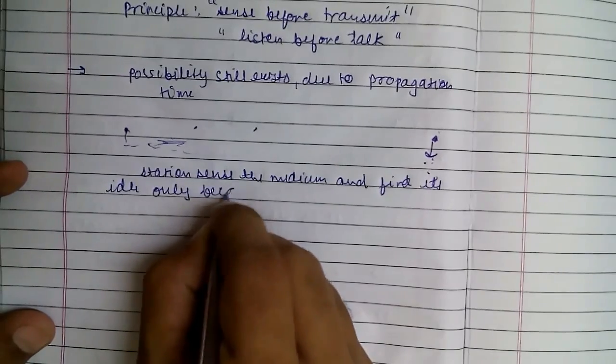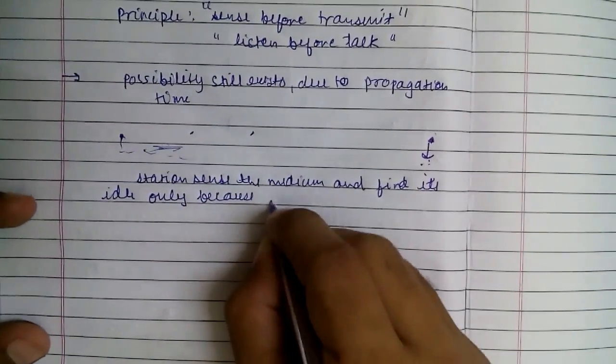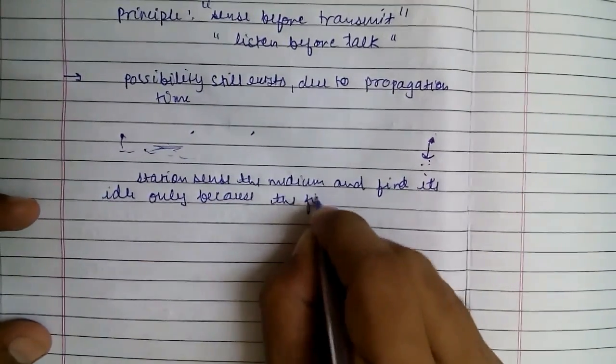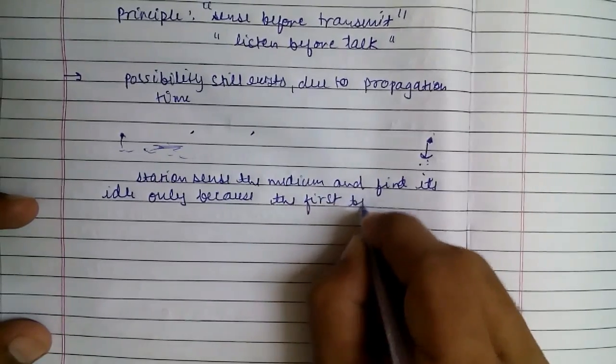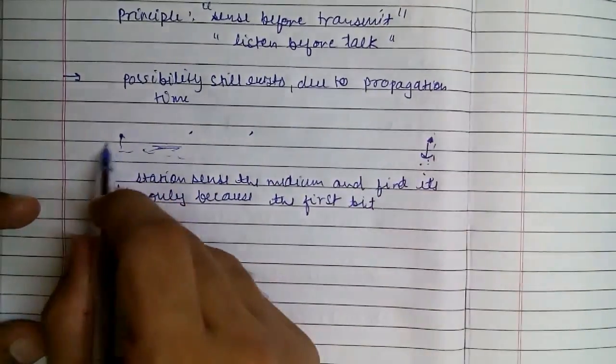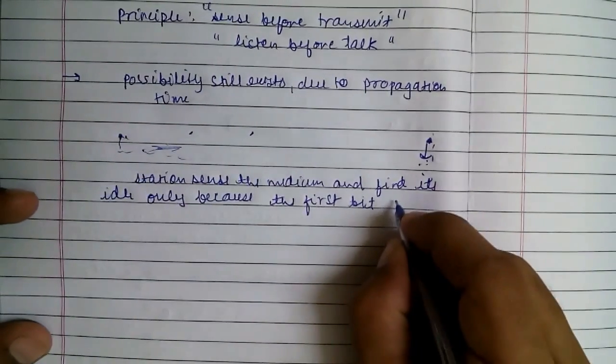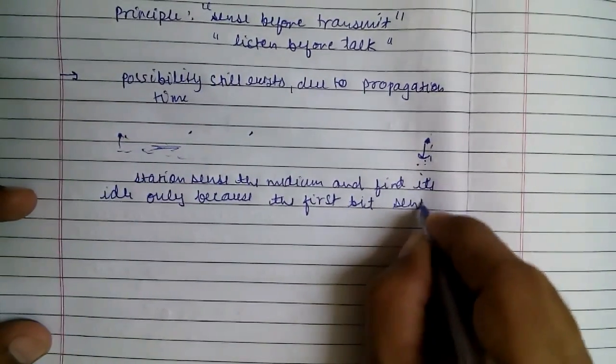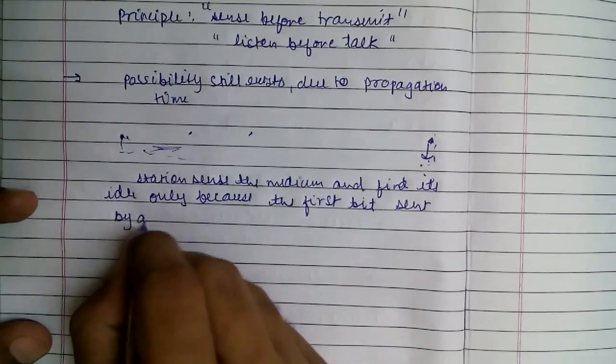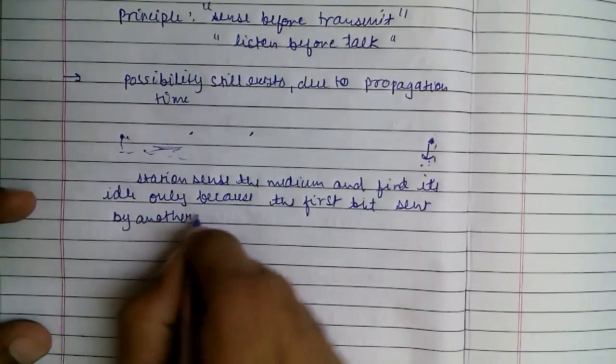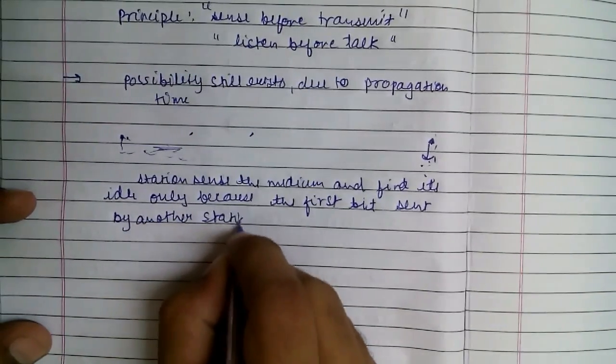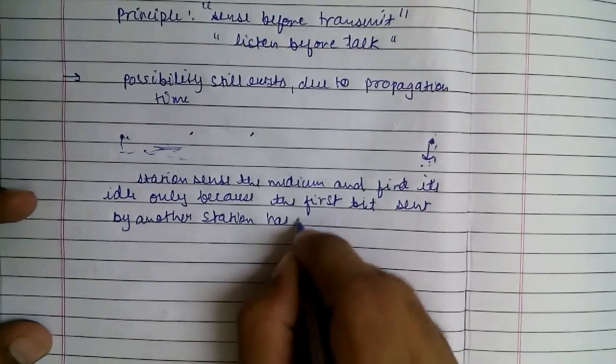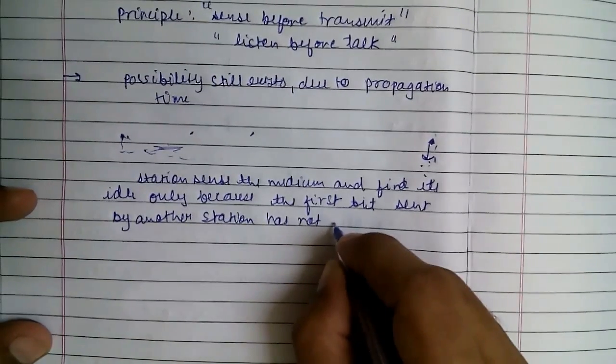The vulnerable period is when the first bit sent by another station has not yet been received.